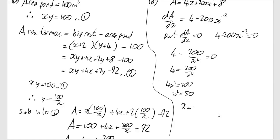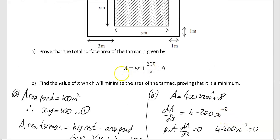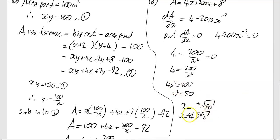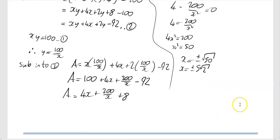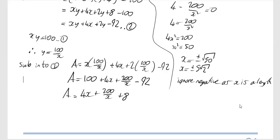So x equals plus or minus the square root of 50, which equals plus or minus 5√2. Since x is a length, we can't have a negative value, so we ignore the negative. Therefore x equals 5√2.